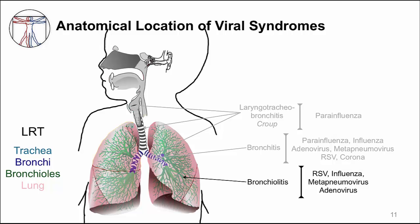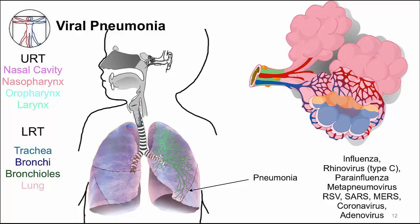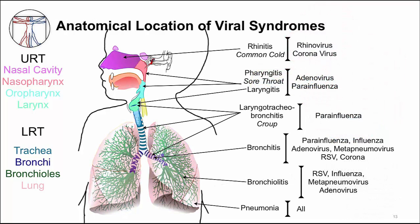At the end of the bronchial trees are the alveoli, and this is where gas exchange occurs. When there is infection of the alveolar epithelium, we call this pneumonia. Inflammation around the alveoli decreases gas exchange and can lead to hypoxia, really increasing the severity of this particular infection. All of the respiratory viruses can cause pneumonia, but influenza is the typical virus that causes viral pneumonia. The anatomic framework will allow you to organize and remember these respiratory viruses, as the location of the infection determines the clinical symptoms, and certain viruses have a predilection for infecting certain locations.